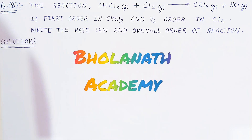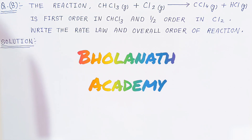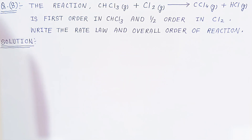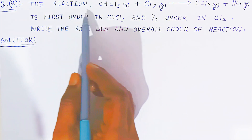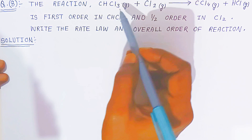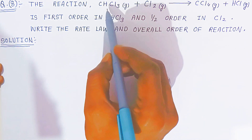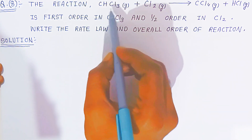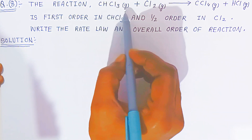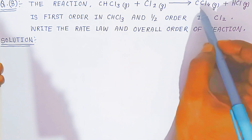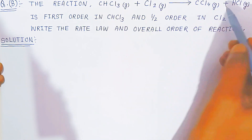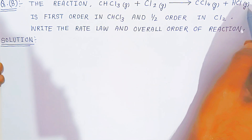Hello students, once again welcome to Bolanath Academy. In this video we are going to see the problem based on chemical kinetics, question 8. In question 8 you have the reaction where chloroform CHCl₃ reacts with chlorine gas, giving carbon tetrachloride gas and hydrogen chloride gas.